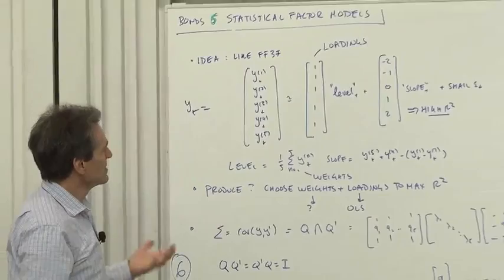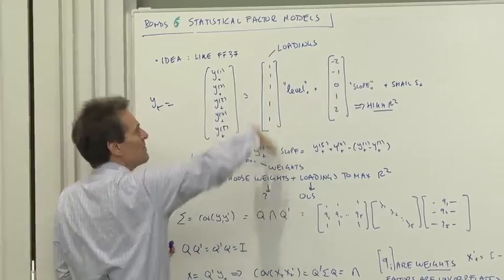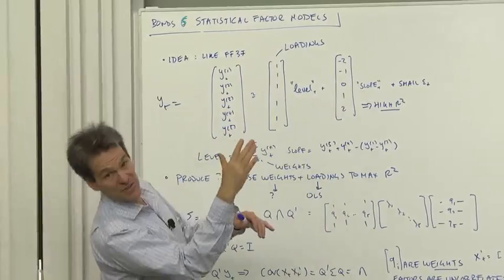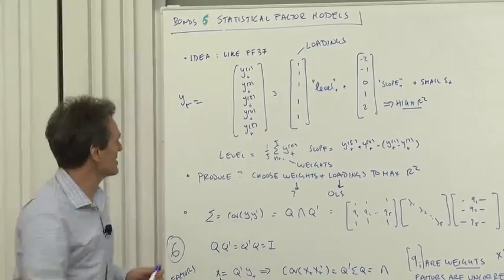How can we write down a model like that? Well, the yields on 1, 2, 3, 4, 5 bonds, our model should look something like this. When level goes up, they all go up and down, and when the slope factor goes up, the long ones go up and the short ones go down, or vice versa.